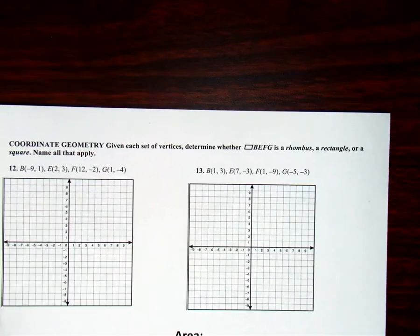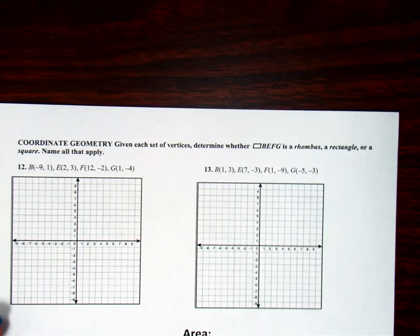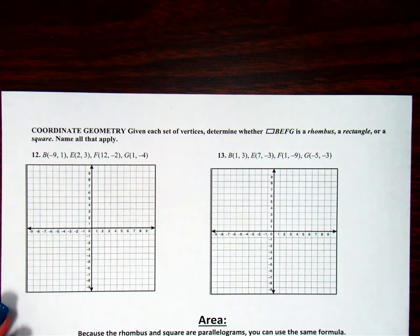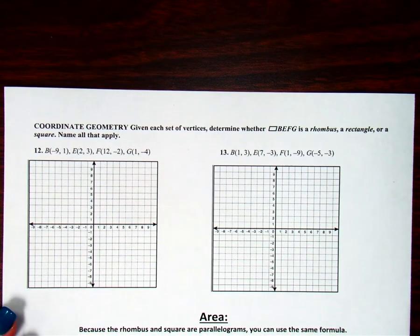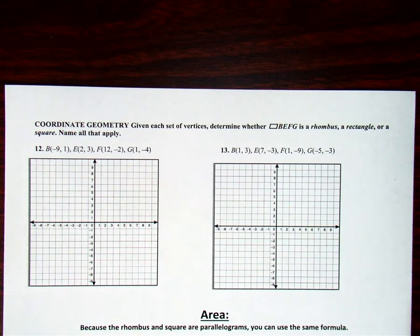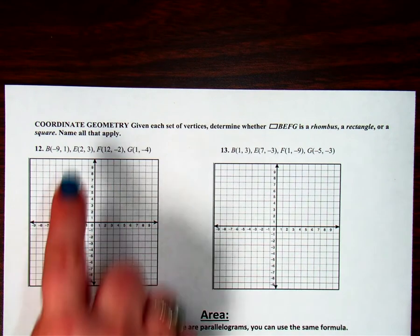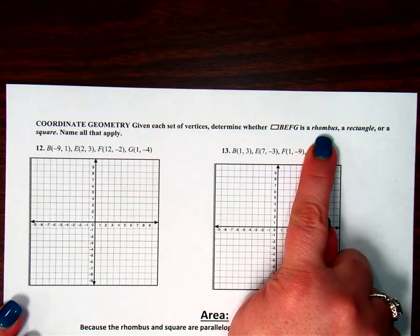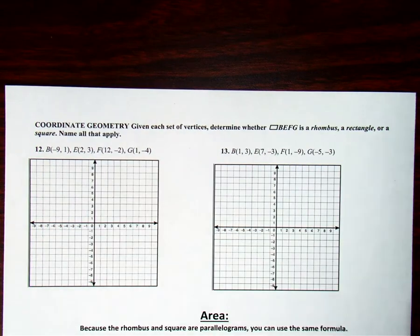The next thing we're going to do, now that we've looked at all of our different types of parallelograms, is graph some quadrilaterals and determine if those quadrilaterals are rhombuses, rectangles, or squares. We're going to name everything that applies — because if it's a square, it's also a rectangle and a rhombus.